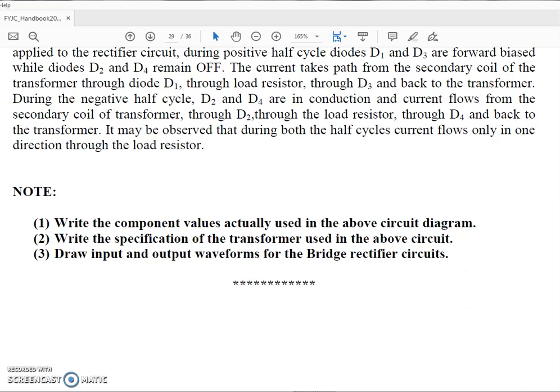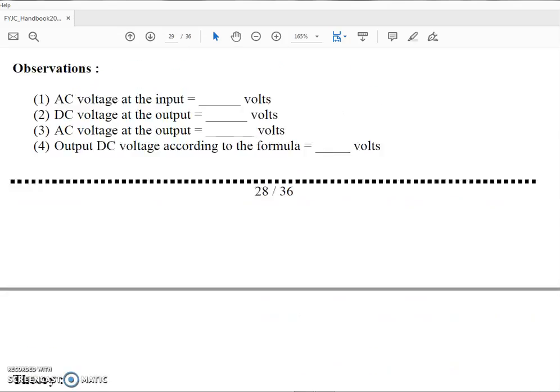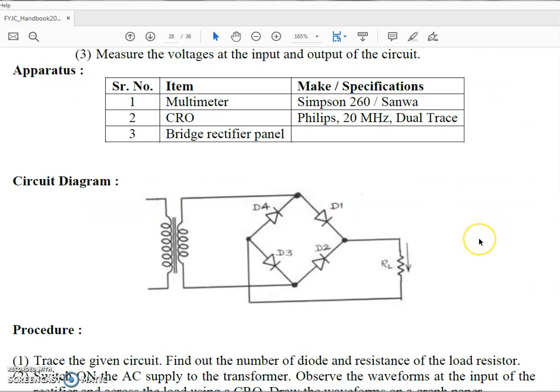If possible, just as you have observed the waveforms for a full wave and a half wave rectifier on CRO, you can observe the output waveform of this bridge rectifier circuit across the RL on CRO. This is the way in which you are going to perform this experiment.